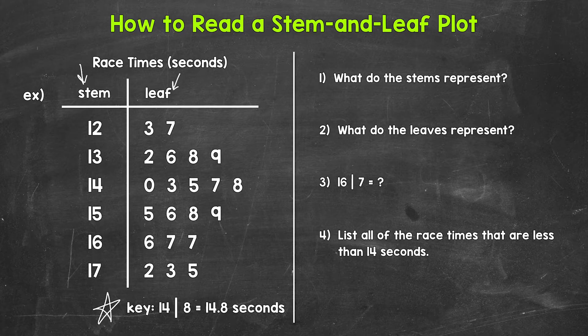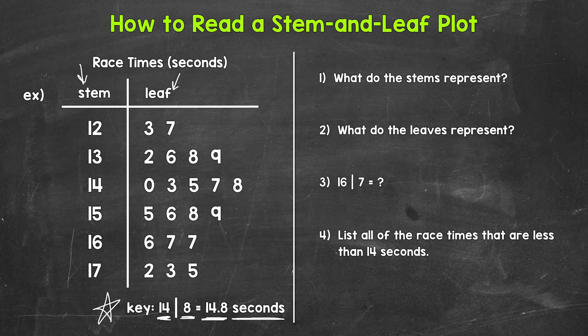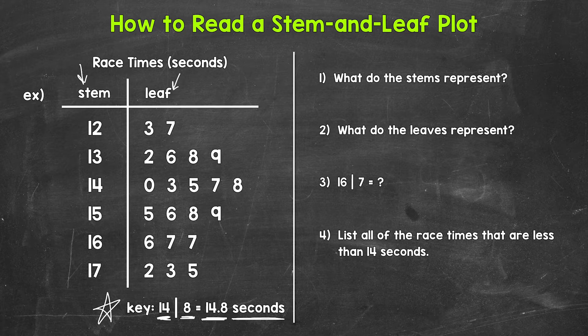This key says that a stem of 14 and a leaf of 8 equals 14.8, or 14.8 seconds. That tells us that the stems represent the tens place and ones place, so the whole number. And then the leaves represent the tenths place.